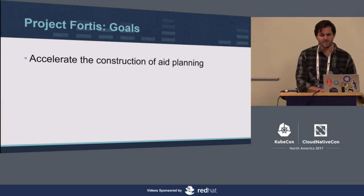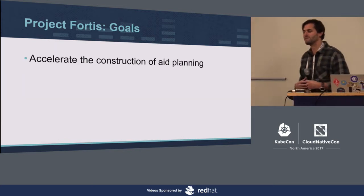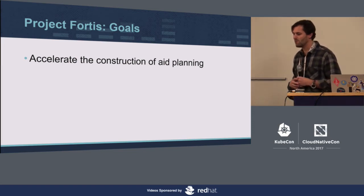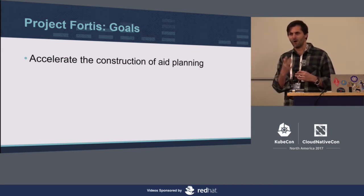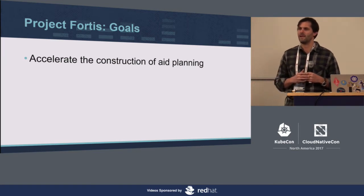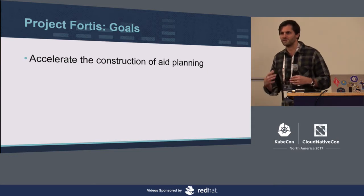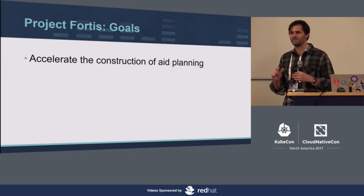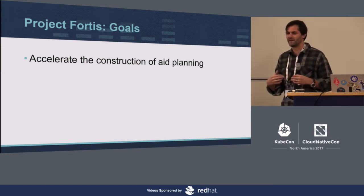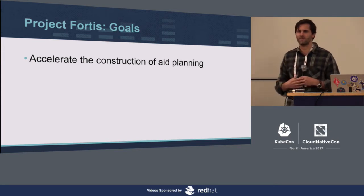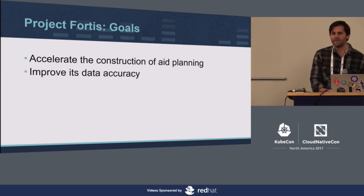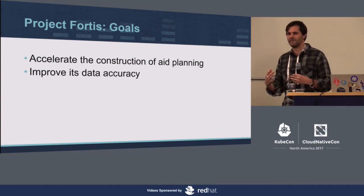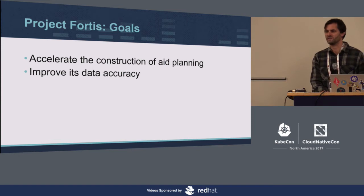With Project Fortis, the main goal was: how do we accelerate the aid planning process? We sat down with the operations team in Cairo to figure out what types of data sources they were collecting. If we were to listen to all those data streams — Twitter, public web, radio — and collect all that information, then use a variety of machine learning and NLP technologies to do topical extraction, identify the location people are talking about, extract sentiment, identify organizations, persons, and events mentioned, we could identify atypical increases of mentions within those channels and provide that level of insight to aid planners so they can make appropriate decisions about where to send their aid workers.